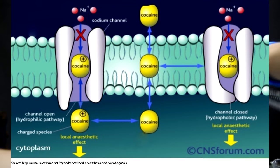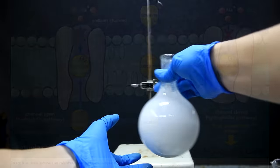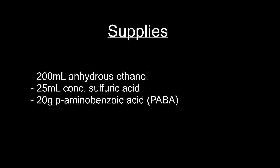Anyway, I hope the intro wasn't too long and I hope you enjoyed the little bit of biochemistry. For the synthesis, I used 200 milliliters of anhydrous ethanol, 25 milliliters of concentrated sulfuric acid, and about 20 grams of PABA. If you don't have anhydrous ethanol, you can also use 95% ethanol, but your yield isn't going to be as good.